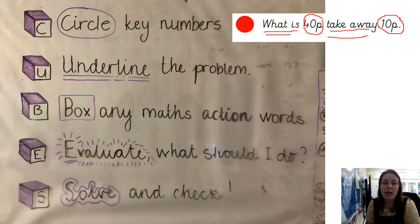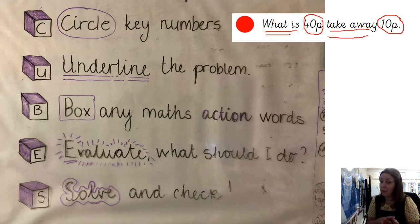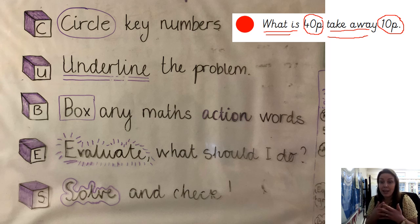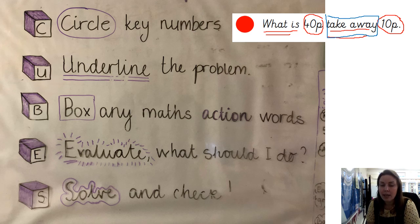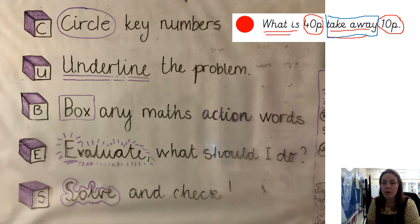I will then box any maths action words. Action words are words such as take away, minus, adding, multiply, put together, altogether — words like these that tell us what we need to do in our problem. I am going to use a blue colour to box the action word for this problem, which will be 'take away'. I will then evaluate what I should do. Take away tells me straight away that the numbers will go smaller because I am using my subtraction knowledge.